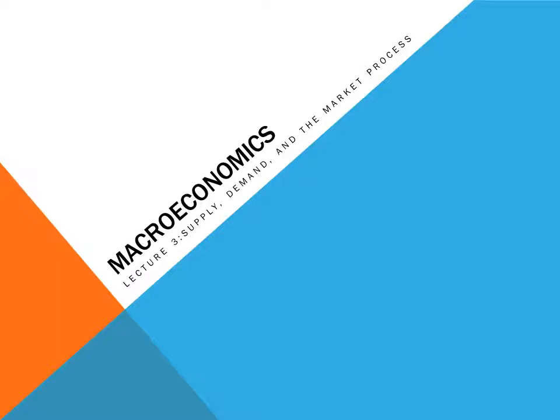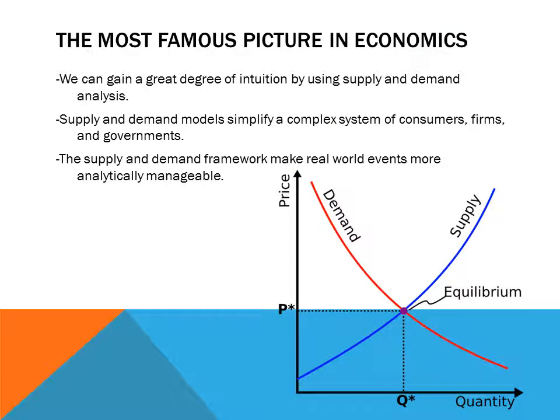Welcome to Macroeconomics Lecture 3. This lecture will cover supply, demand, and the market process. The supply and demand graph has to be one of the most famous pictures in economics, and we can gain a great deal of intuition by using supply and demand analysis. Supply and demand models simplify a complex system of consumers, firms, and governments. The supply and demand framework makes real world events more analytically manageable.